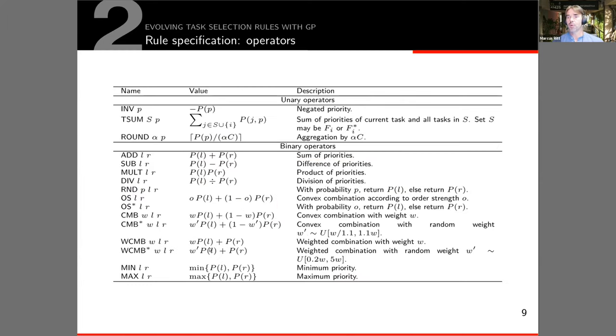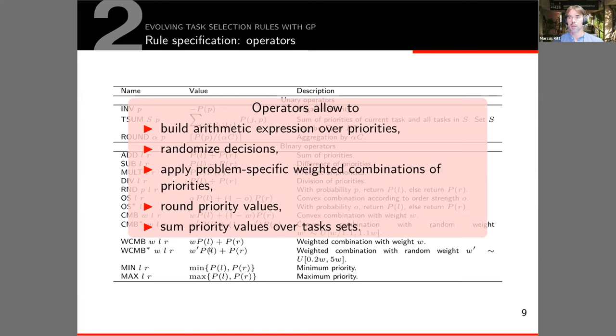For the operators we have arithmetic expressions of the priorities, we can randomize decisions, we have convex combinations of priorities, we have a kind of rounding of priority values which together with a multiplication factor leads to a sort of binning, so certain tasks are grouped into certain groups or bins. Importantly, we can also sum over priority values over task sets.